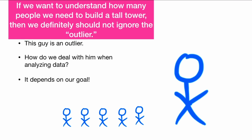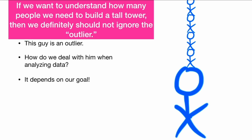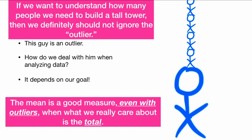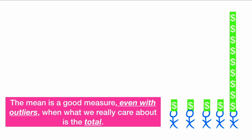However, if we want to understand how many people we need to build a really tall tower, then we should definitely not ignore the so-called outlier — he's going to be relevant to building the tower because he's going to help us reach really tall. So we should not ignore him. The mean is a good measure even with outliers when what we really care about is the total, because the mean is related to the total — it's the total divided by the sample size.